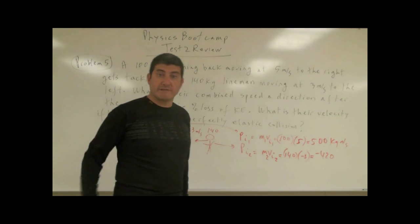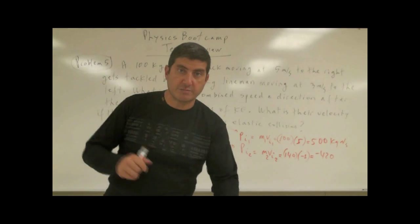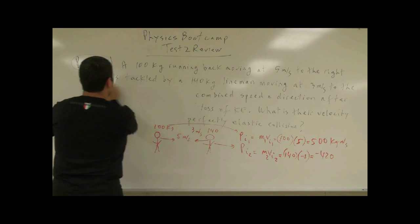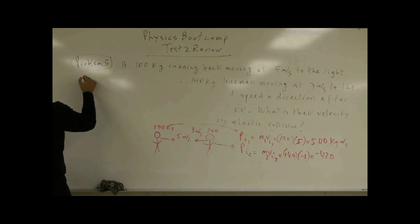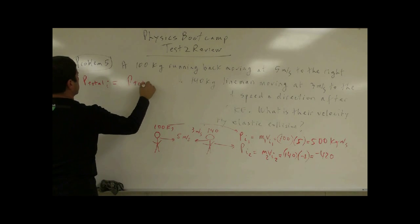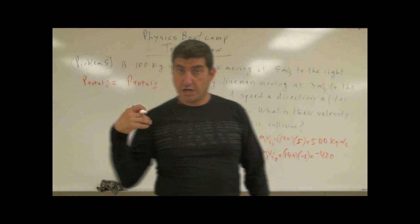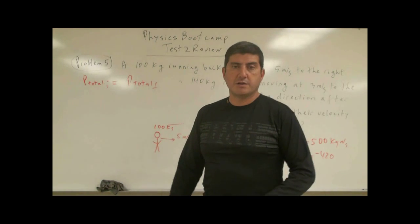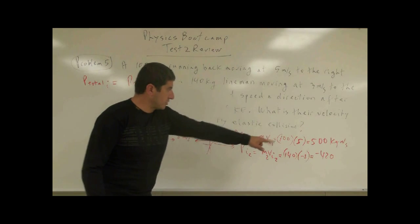Believe it or not, the running back is still winning — he has more momentum even though the lineman is bigger. So the net momentum before the collision: the law of conservation of momentum says the total momentum is conserved before and after. The net initial momentum is 500 − 420 = 80 kg·m/s.